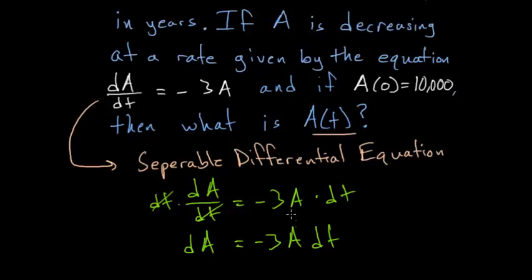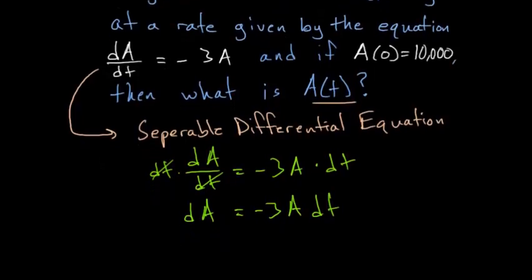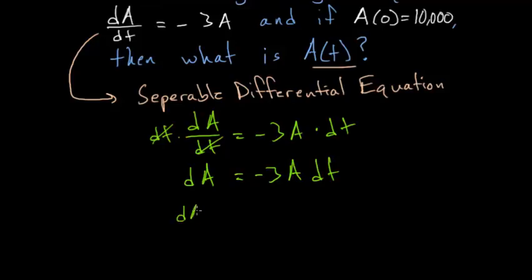We need to get A on the same side as dA. So let's divide each side by A, so that we have dA over A equals minus 3 dt. And from here, we can just integrate each side. The left-hand side will integrate with respect to A, and the right-hand side will integrate with respect to t.